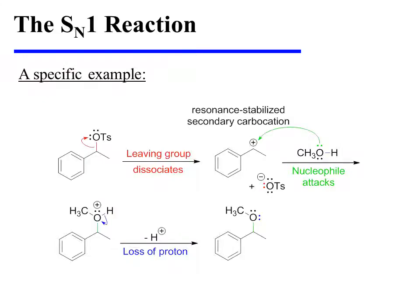In this specific example, a tosylate is the good leaving group that dissociates from the substrate to form a benzylic carbocation. This carbocation is not only secondary, but it is also resonance stabilized. Methanol serves as a weak nucleophile, which attacks the benzylic carbocation, yielding an oxonium ion, or positively charged oxygen. Loss of a proton from this intermediate yields the product, which is an ether.